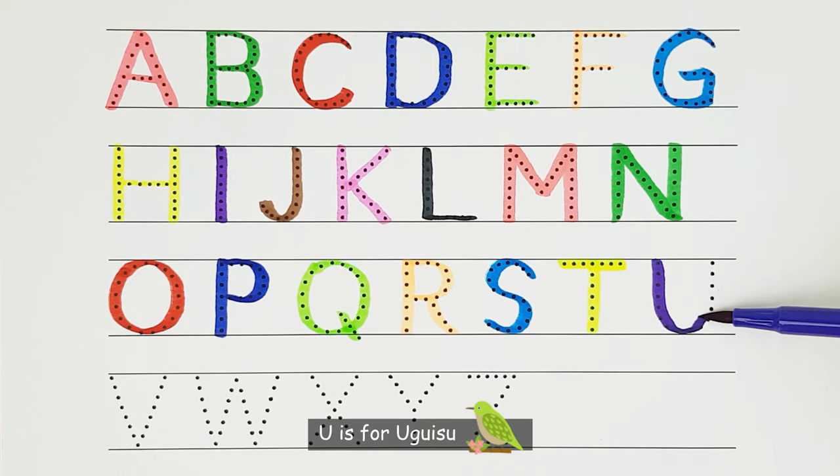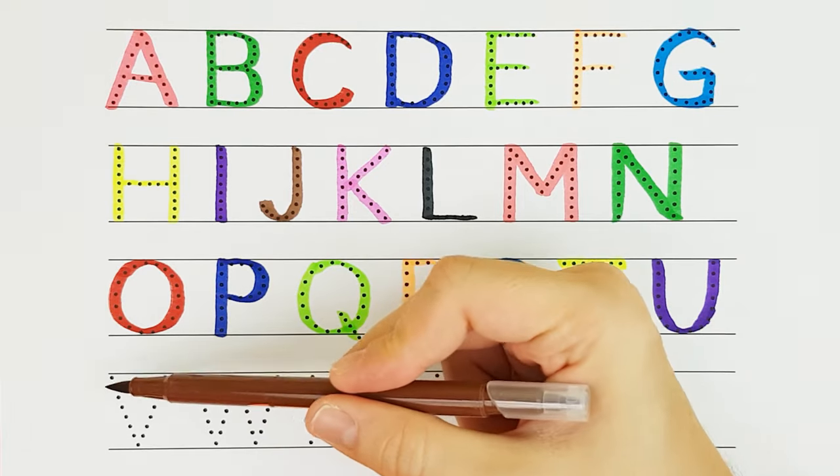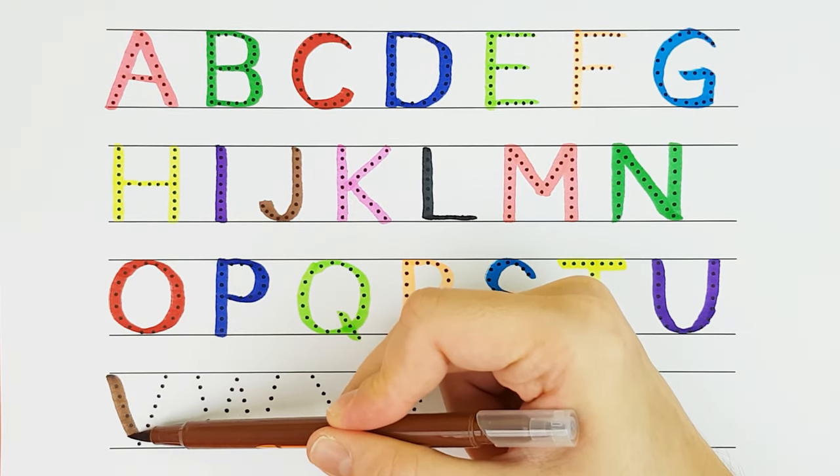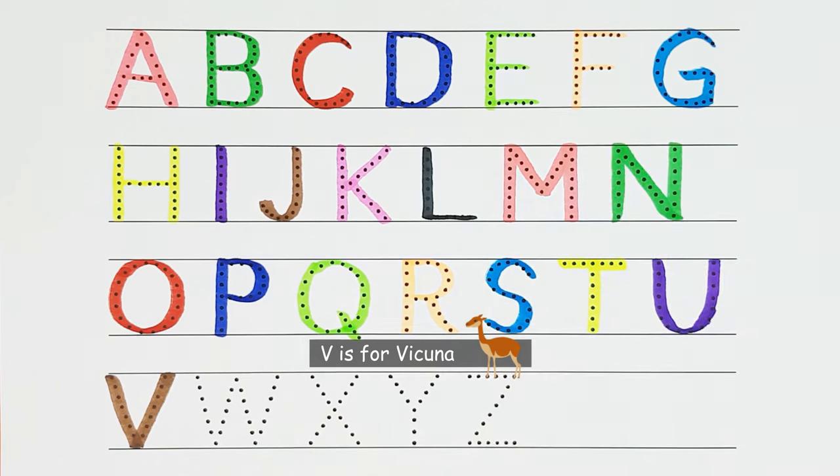U. U is for uguisu. U. V. V is for vicuna. V.